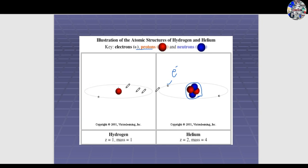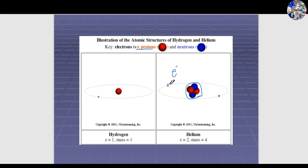For hydrogen, the atomic number Z equals one and mass equals one gram. For helium, the atomic number is two and mass is four grams. Helium's nucleus consists of two protons and two neutrons, with two electrons revolving around the nucleus.